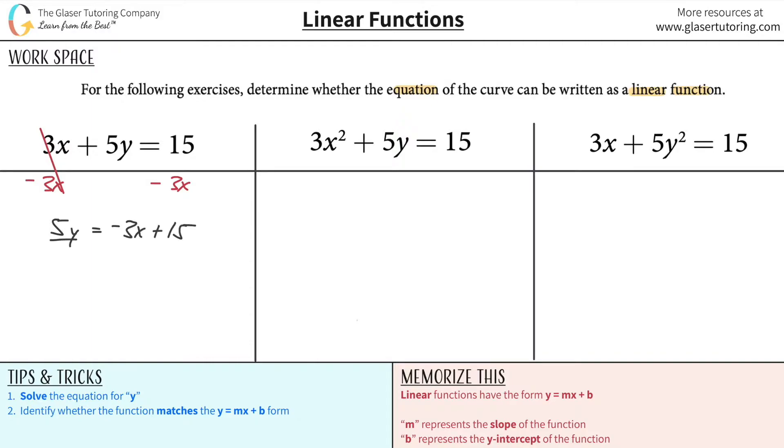So I bring that away first. Now I have 5y equals negative 3x plus 15. Then getting y by itself, I have to divide this all by 5. So now y will be equal to negative 3x plus 15 all over 5.